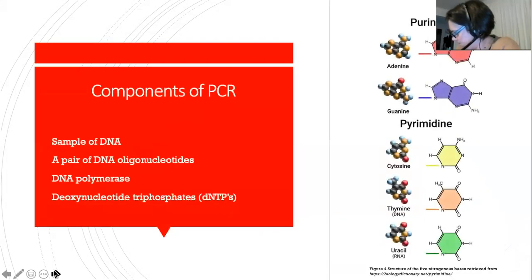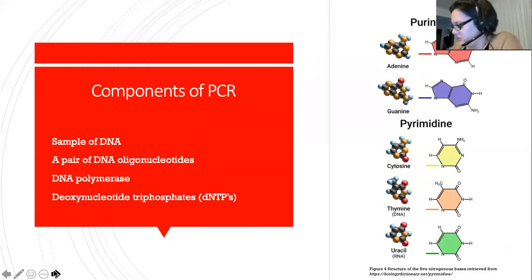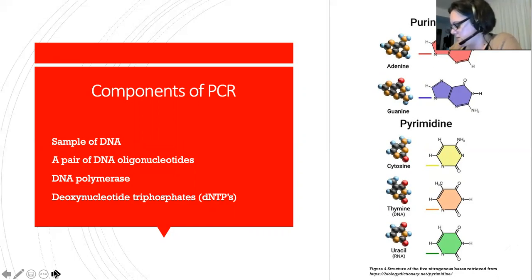Several components are required to carry out PCR successfully. These components are added to the solution in which the PCR is performed. A sample of double-stranded DNA called template DNA is the target molecule for the amplification and can be obtained from cells of any living thing, such as humans, animals, plants or viruses. A pair of oligonucleotides, often referred to as primers, are short chemically synthesised sections of DNA with an explicit nucleotide sequence which is complementary to the end segments of the target DNA that is to be amplified.